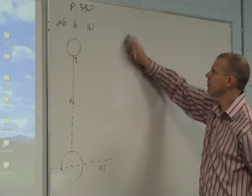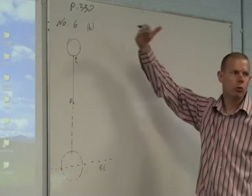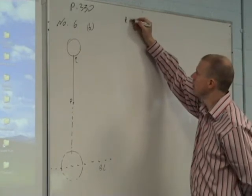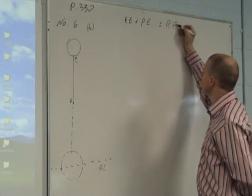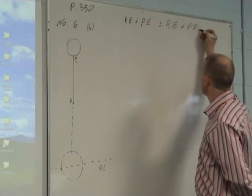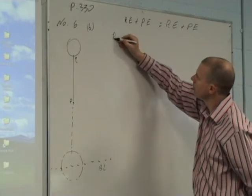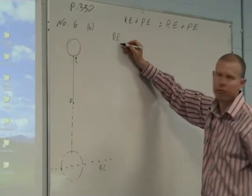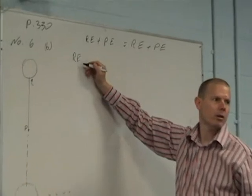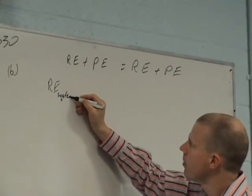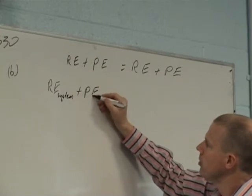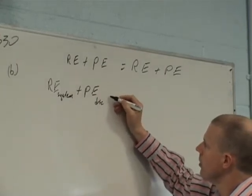Next step, how do we start off? My overall rule is what? Rotational energy plus potential energy at the beginning equals rotational energy plus potential energy at the end. And I've got to say rotational energy for which part? Both. Everything. So we call it the system.